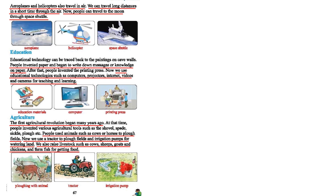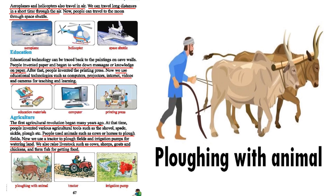Regarding the agricultural sector: the first agricultural revolution began many years ago. At that time, people invented various agricultural tools such as the shovel, spade, sickle, and plough. People used animals such as cows or horses to plough the fields. Now we use a tractor to plough fields and irrigation pumps for watering land. We also raise livestock such as cows, sheep, goats, and chickens, and farm fish for food.